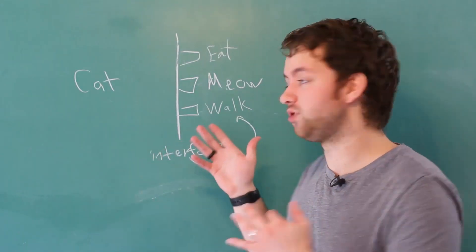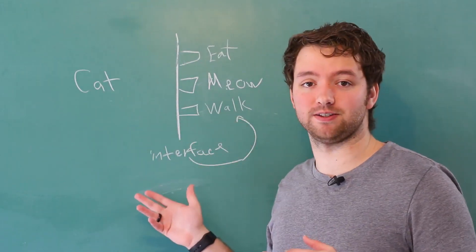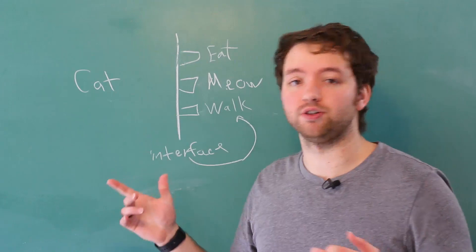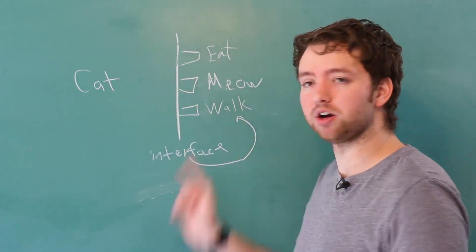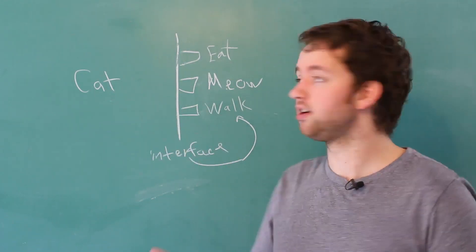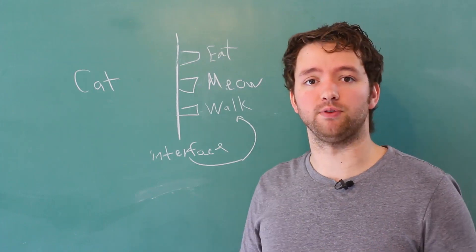So we can define each one of these behaviors using interfaces. And we can reuse those interfaces. So for example, cats walk, but so do dogs. So dogs can use that interface, humans can use that interface, and so forth.